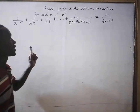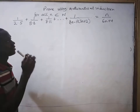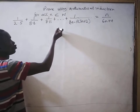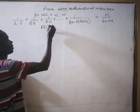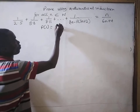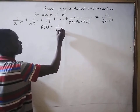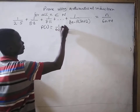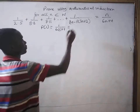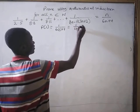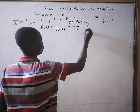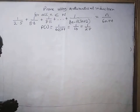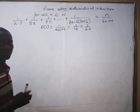First let us look at the base step. Here we take n equal to 1. So we find P(1) equals 1 divided by (6 times 1 plus 4), which is equal to 1 divided by 10. And this is equal to 1 divided by (2 times 5). So P(1) is true.